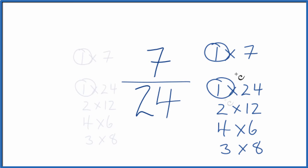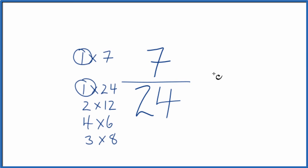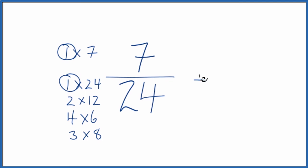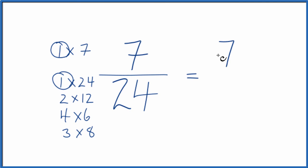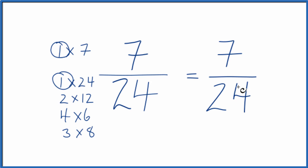7 divided by 1 equals 7, and 24 divided by 1 equals 24 — and we're right back where we started. What that means is the fraction 7/24 is already simplified. It's already in lowest terms. We can't reduce it any further.